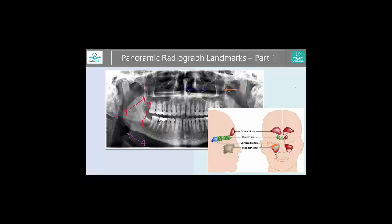First, look at number one. What is this? This is the maxillary sinus — especially the bottom, the floor is right here. A great way to memorize this is to see if it comes all the way down to the maxillary molars, because this one looks very similar but does not come all the way down. That's why sometimes dentists, periodontists, or oral surgeons have to perform a sinus lift because this floor is way too low. If they are performing some sort of procedure here, especially an implant, you don't want to perforate this floor.